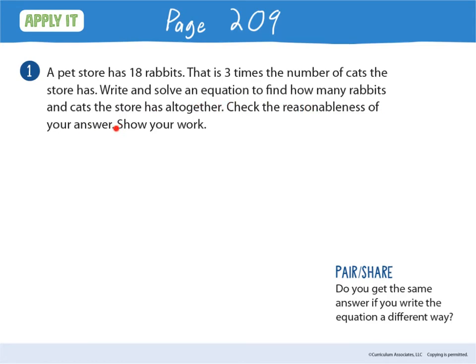What are we talking about in this story? We're talking about pets — rabbits and cats. What are we trying to find out? How many rabbits and cats the store has altogether, so we know we're going to be adding at some point. Important information: there are 18 rabbits, and that is three times the number of cats. We need to figure out how many pets they have — so first, how many rabbits and how many cats.